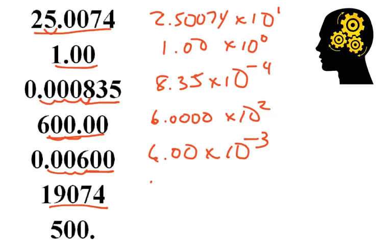Five significant figures, 1.9074, and it moved 1, 2, 3, 4 times. And it was greater than 1, so it's positive 4.